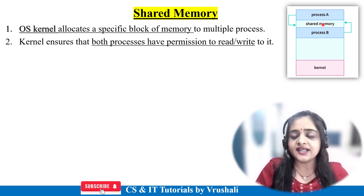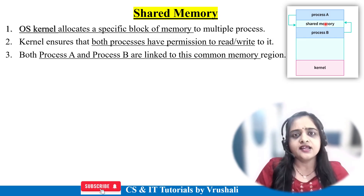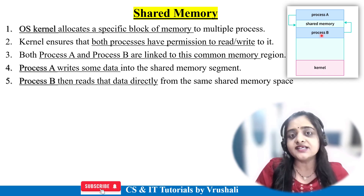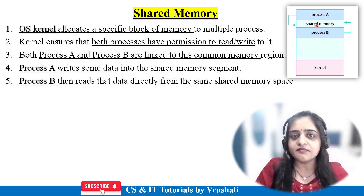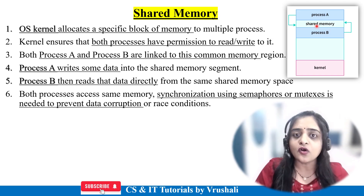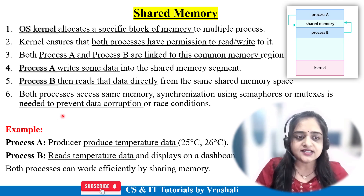The operating system allocates the same shared memory to Process A and Process B. In this shared memory, Process A and B perform different read and write operations. Process A writes some data into this shared memory, and then Process B reads the same data from this shared memory — they perform all operations on the same memory region. The operating system uses semaphore or mutex algorithms to prevent data corruption or race conditions while sharing information.